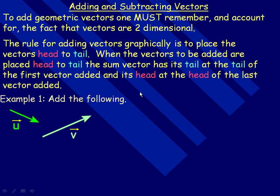The rule for adding vectors graphically — and there are actually two ways I'll show — is to place the vectors head to tail. That's the method that most people use. When the vectors to be added are placed head to tail, the sum vector has its tail at the tail of the first vector added, and its head at the head of the last vector added.